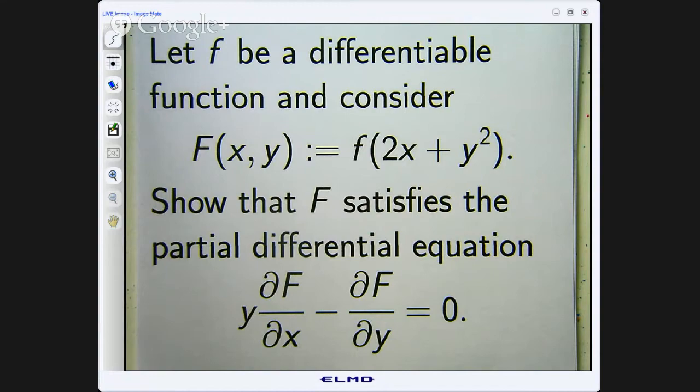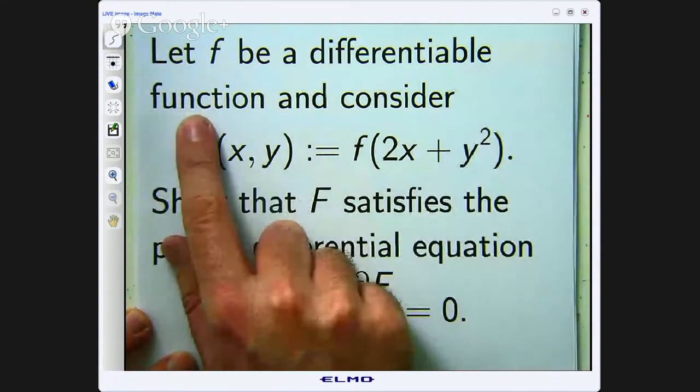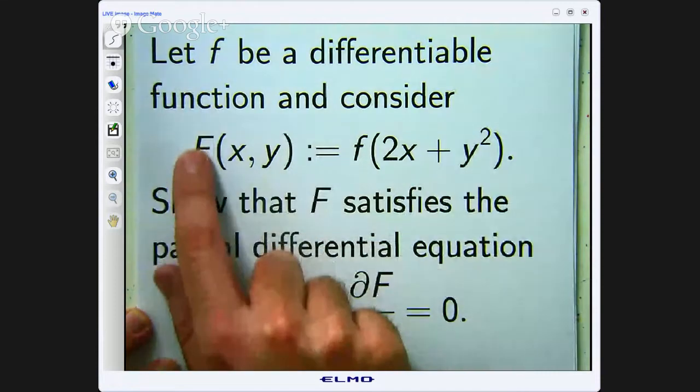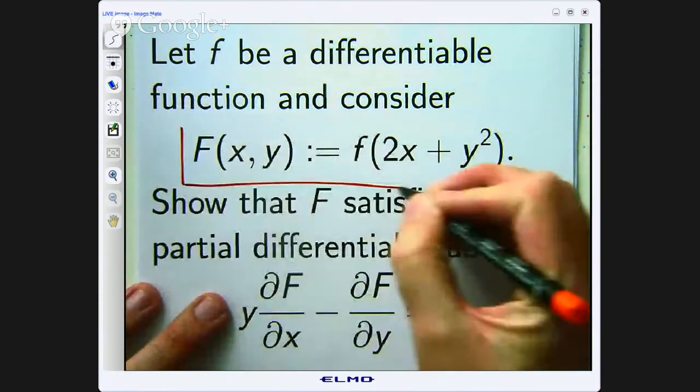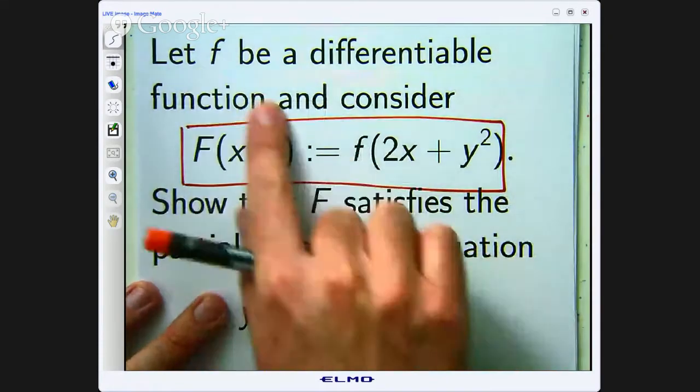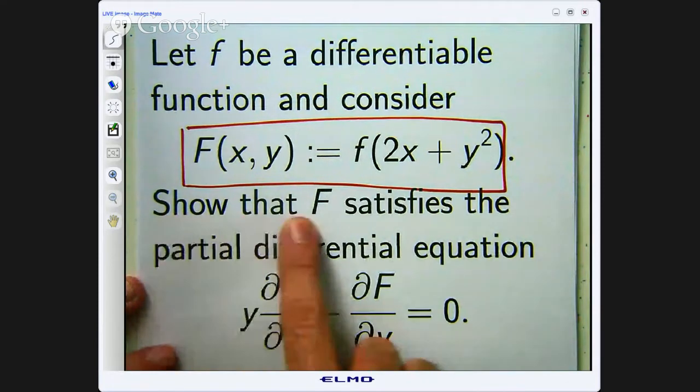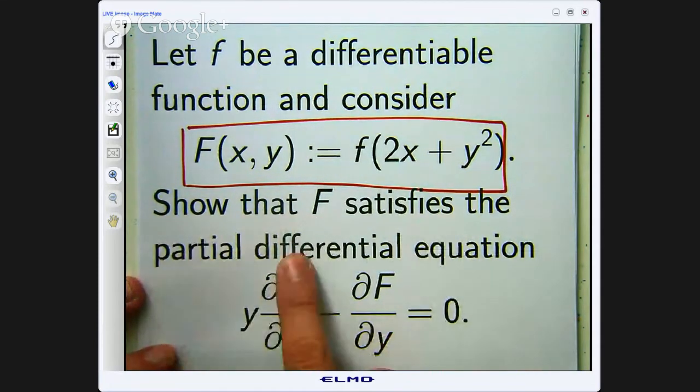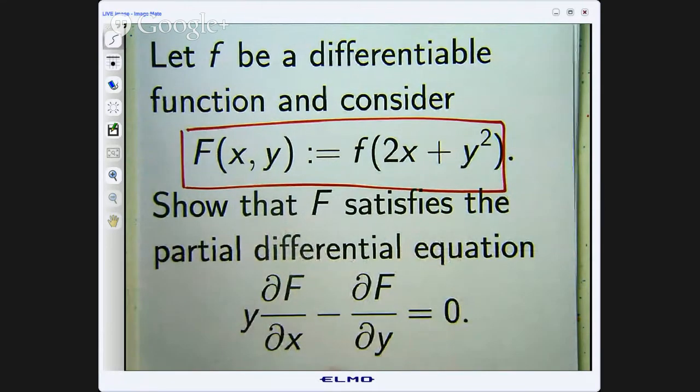Okay, so let's have a look at the example. Let f be a differentiable function and consider big F defined in the following way: F(x,y) := f(2x + y²). It's like a function of a function. Now little f here is differentiable, we don't know what it is but we just know it's differentiable. Show that big F satisfies the partial differential equation given down here.